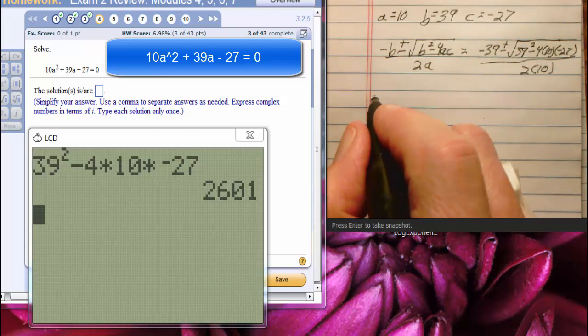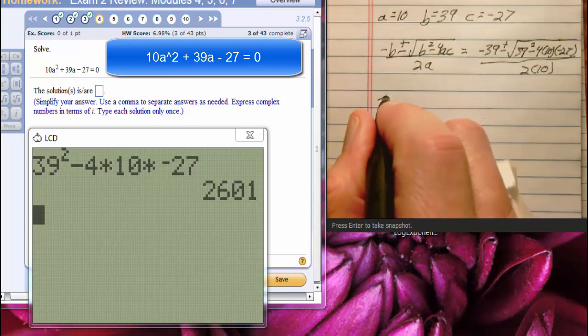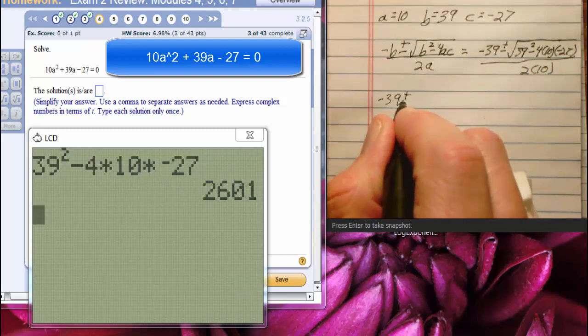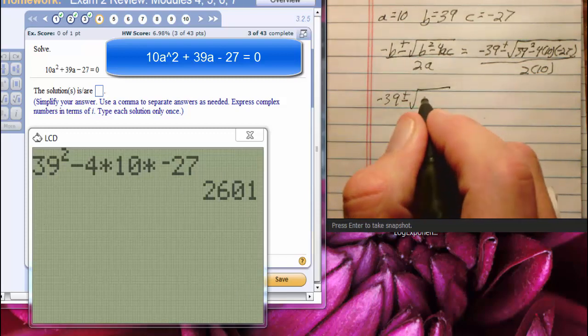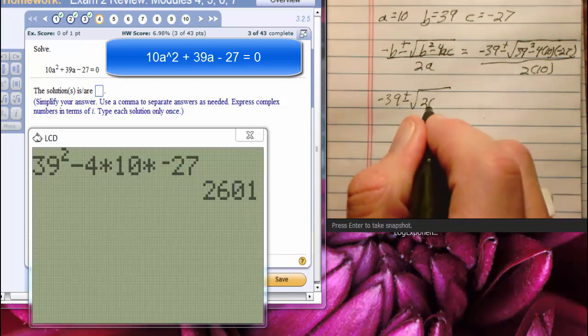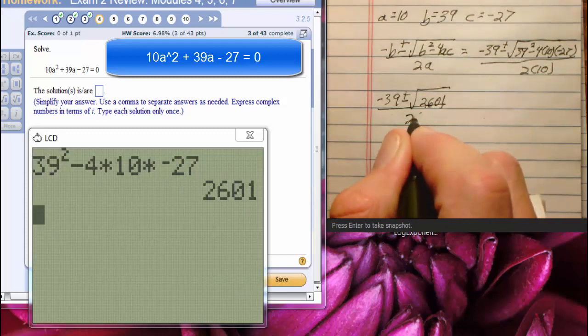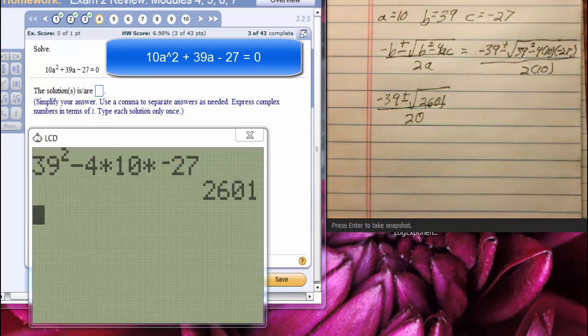So I'll have negative 39 plus or minus the square root of 2601 over 20, which is 2 times 10. Let's see if there's a square root of 2601. 2nd, x squared, 2601, enter. And there is. Yay!